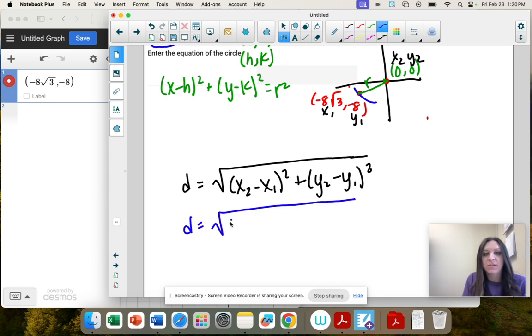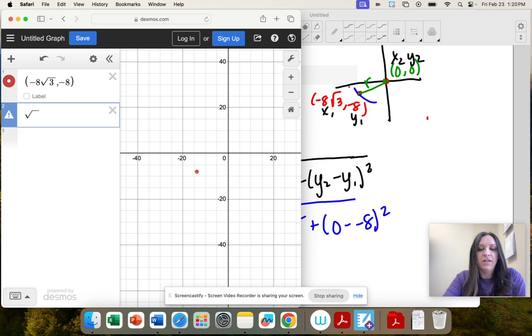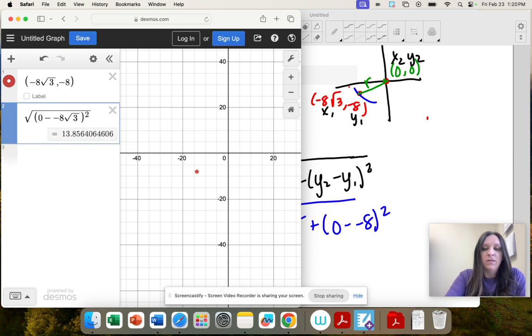So x2 is 0. x1 is negative 8 square root of 3. Not the plus 0 minus negative 8. And I'm going to just put that whole thing in the calculator. Minus, minus. So my radius is 16.